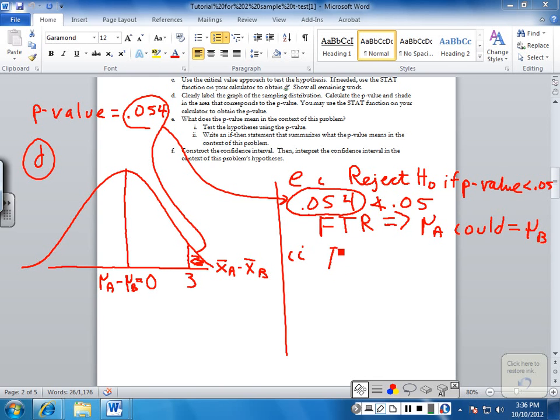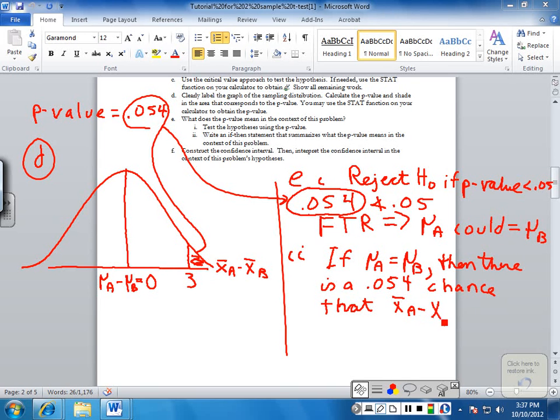So if HO is true, if mu A is equal to mu B, that's equivalent to saying if mu A minus mu B is equal to 0. You could have said that either way. Then there is a 0.054 chance that the difference between the two sample means, X bar A minus X bar B, is greater than or equal to 3. Again, all I've done is put the picture over here into the form of a sentence.